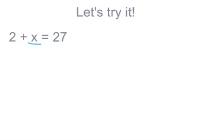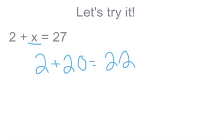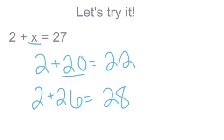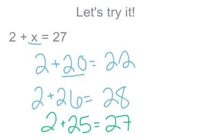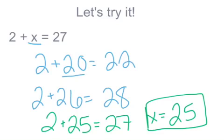I'm going to start with maybe like a guess and check strategy. So maybe I'll do 2 plus 20, but that would only get me to 22, so I know it's going to have to be more than 20. So maybe 2 plus 26 because it's close to 27, but that would get me to 28 which is one more. So then I'm probably going to be able to figure out that 2 plus 25 would get me to 27. And my x, my unknown, would be 25. This part right here you really don't need to include just yet, but you do need to figure out that the unknown in that sentence would be 25.